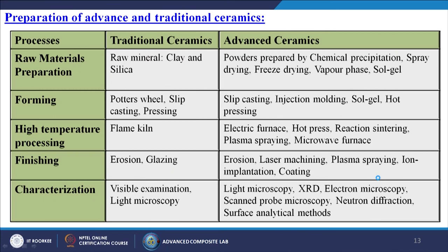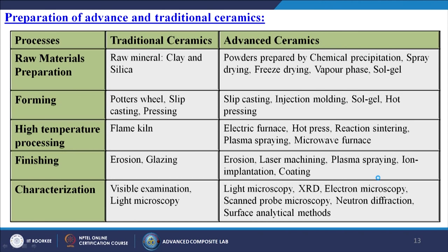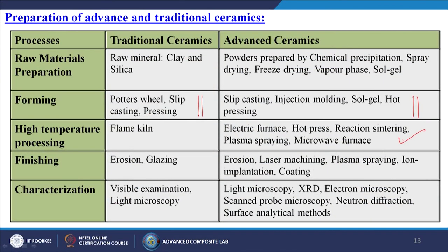For raw material preparation, traditional ceramics use clay and silica while advanced ceramics use powders prepared by chemical precipitation, spray drying, freeze drying, vapour phase, or sol-gel methods. For forming, traditional ceramics use the potter's wheel, slip casting, and pressing, while advanced ceramics use slip casting, injection moulding, sol-gel, and hot pressing. For high-temperature processing, traditional ceramics use flame kilns whereas advanced ceramics use electric furnaces, hot presses, reaction sintering, plasma spraying, and microwave furnaces.